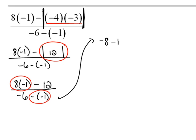Then we have minus 12, just recopying everything else, over negative 6. This double negative here makes a positive, so that's a positive 1.